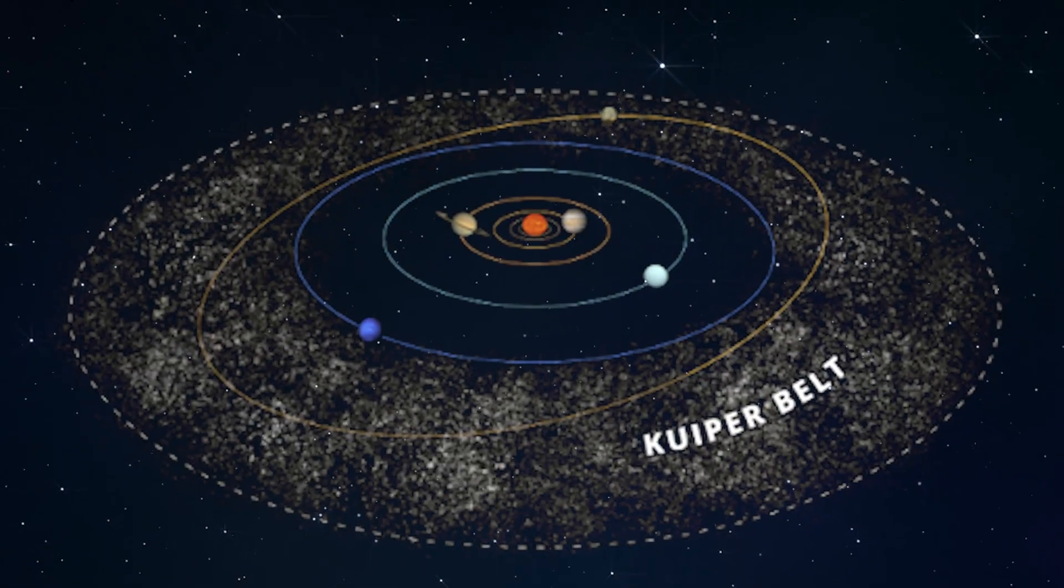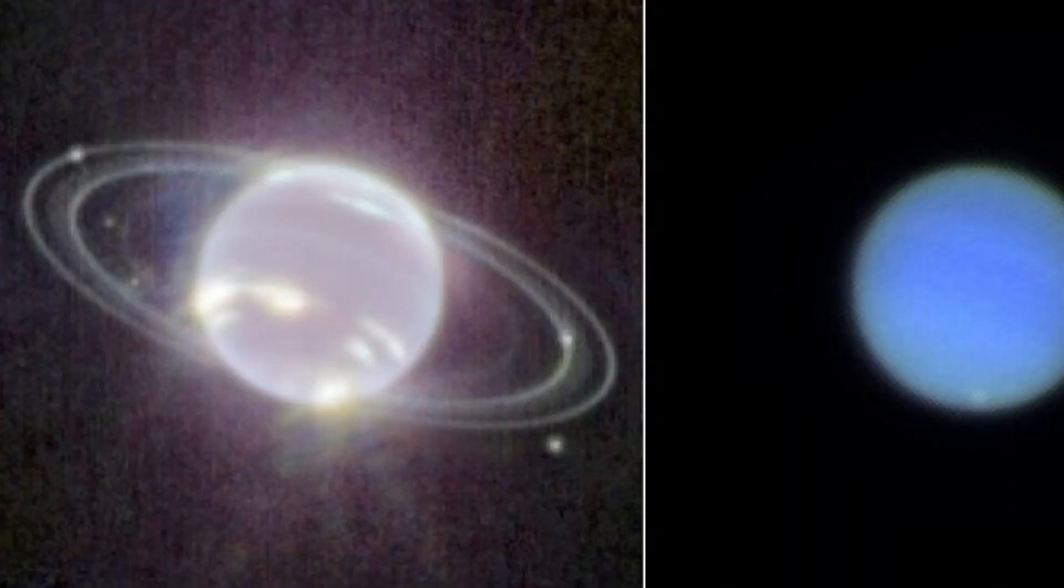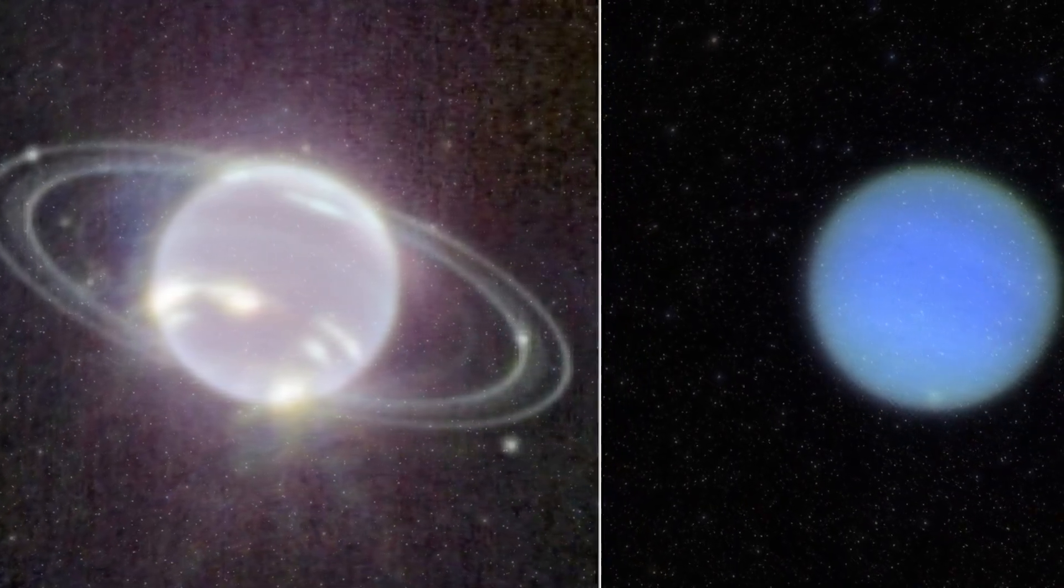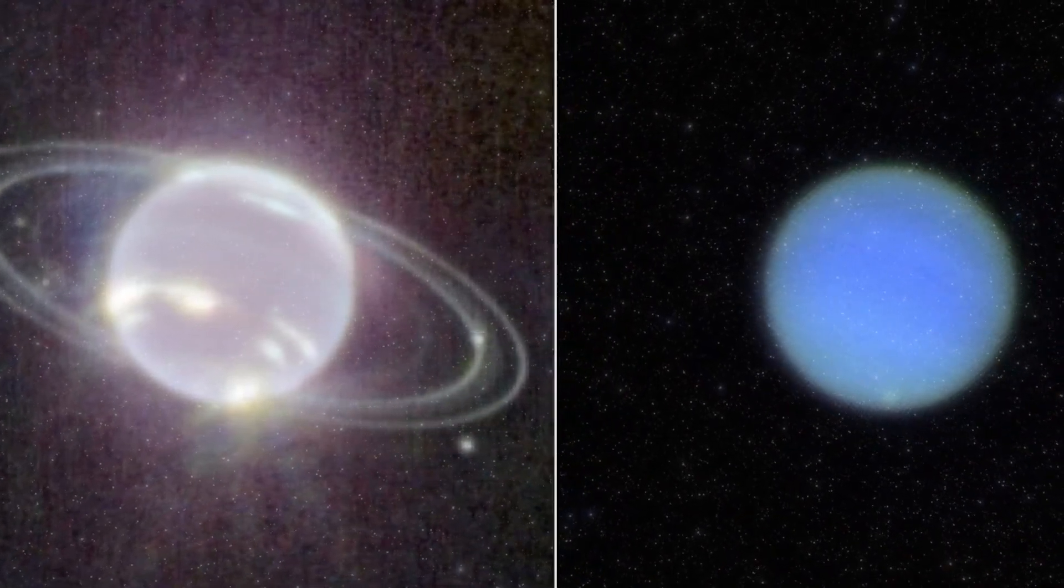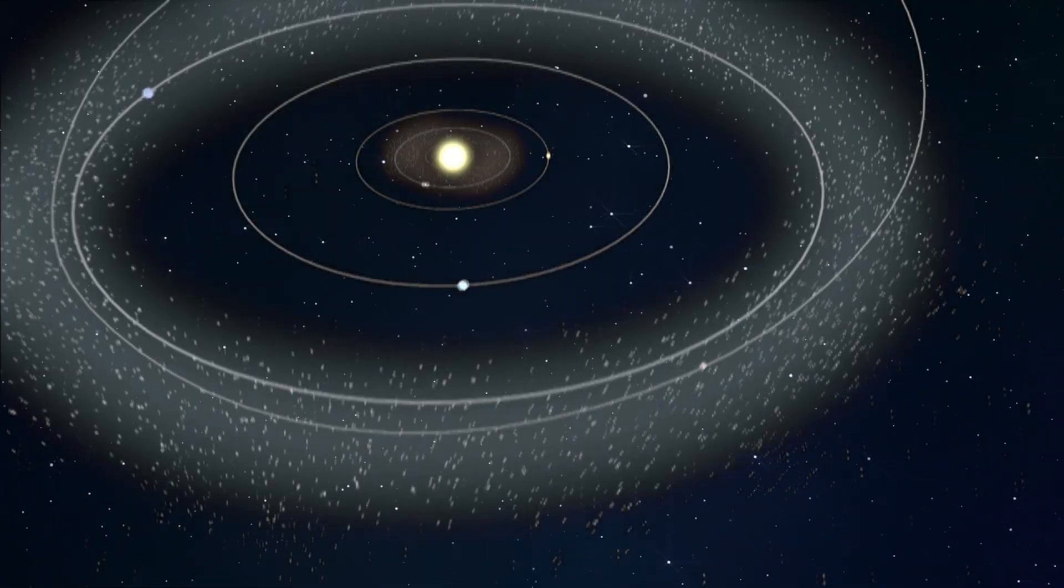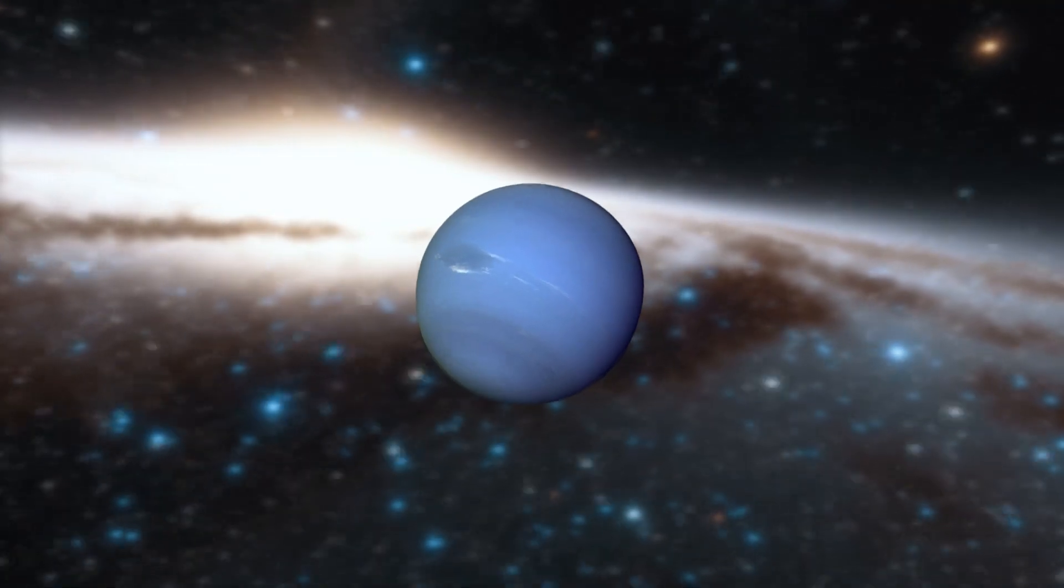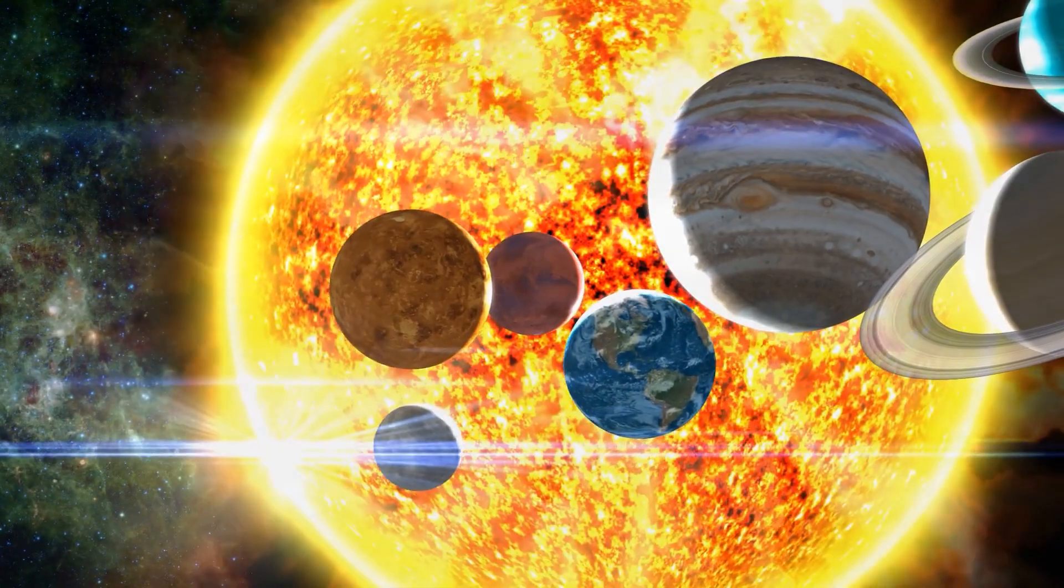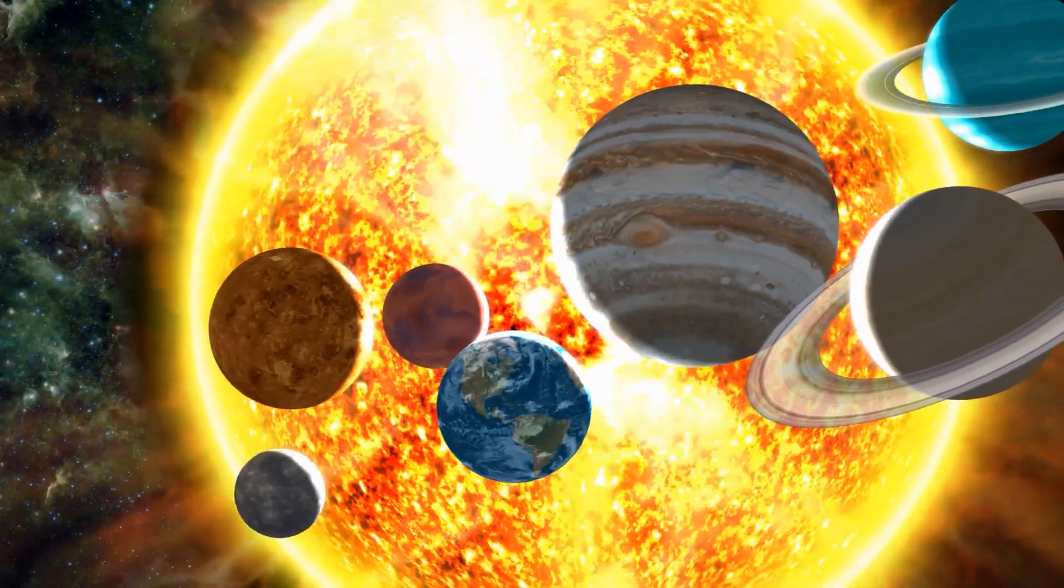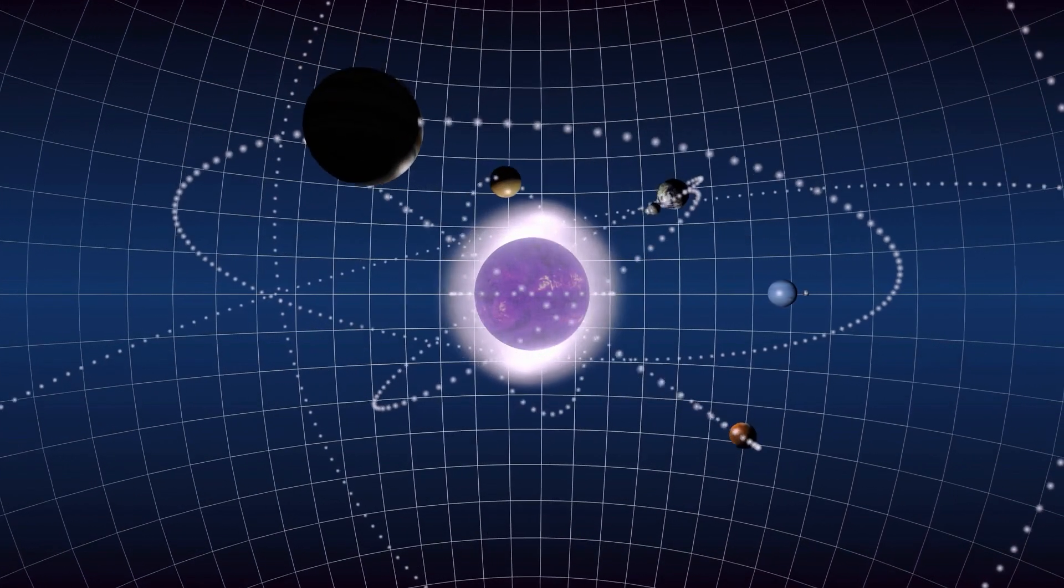Neptune's connection to the Kuiper Belt, the outer edge of our solar system, raises interesting questions. Without Neptune's gravitational influence, a planet might have formed from these objects. Scientists have observed that some Kuiper Belt objects, including Pluto, are in resonance with Neptune, suggesting that Neptune may have migrated from the inner regions of the solar system. This migration likely helped retain many Kuiper Belt objects within our solar system.